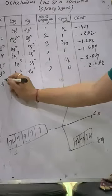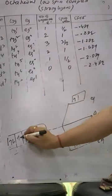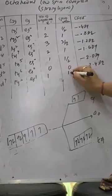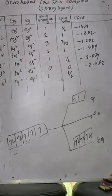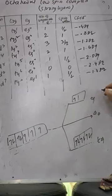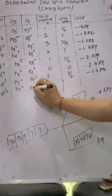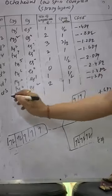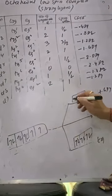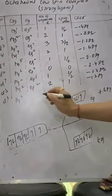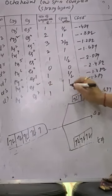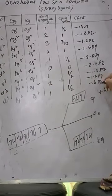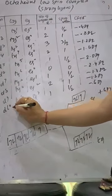D7: T2G6, EG1, unpaired electrons = 1, spin = 1/2. CFSE = minus 2.4 DQ plus 0.6 DQ = minus 1.8 DQ, because EG contributes plus 0.6 DQ. D8: T2G6, EG2, unpaired electrons = 2, CFSE = minus 1.2 DQ. D9: T2G6, EG3, unpaired electrons = 1, spin = 1/2, CFSE = minus 0.6 DQ (1.2 + 0.6 = 1.8... corrected to 0.6 DQ). D10: T2G6, EG4, CFSE = 0.